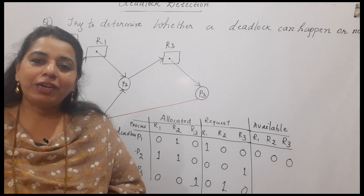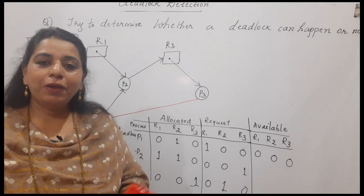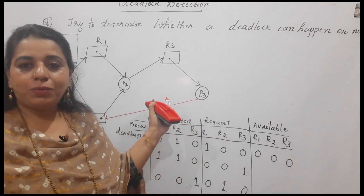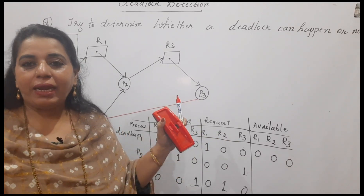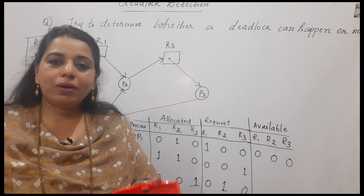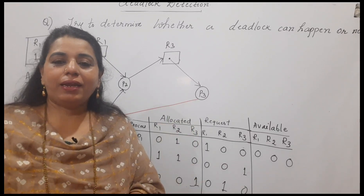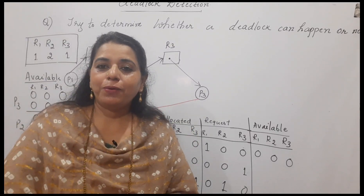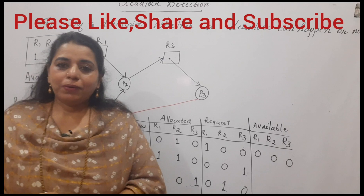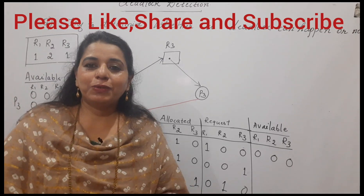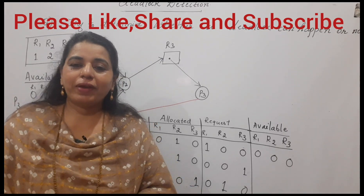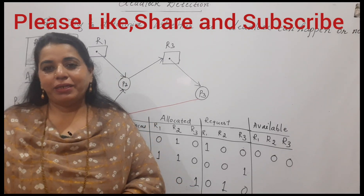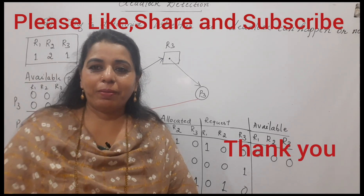This is how you detect deadlock using the resource allocation graph. This was a simple graph; in the next session I will take a more complicated graph to explain deadlock detection further. Hope this session was useful. If you find it useful, please like, share, and subscribe to my channel. Thank you, bye bye, take care.